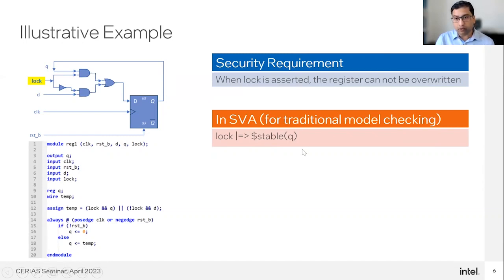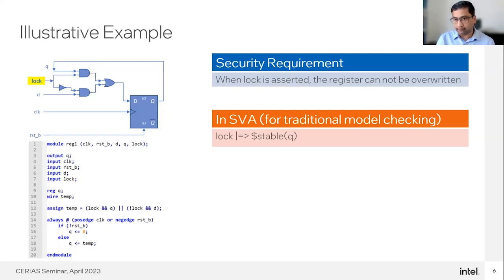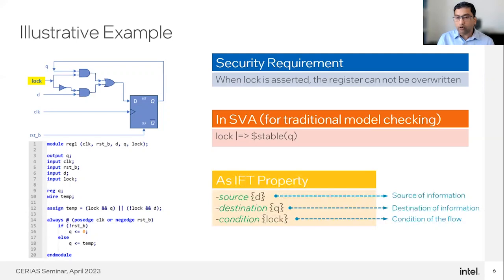Formal verification is a technique that mathematically proves that a circuit satisfies a property. In traditional applications, formal verification properties are represented in System Verilog Assertion, and there are multiple tools available to verify them. Now let's see how we can capture this requirement as an information flow property.